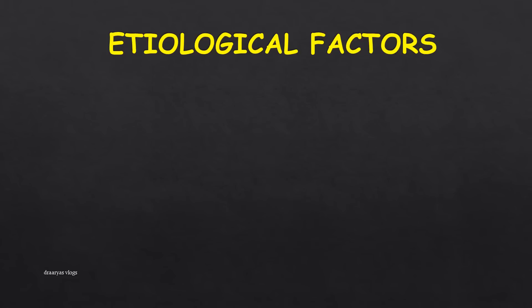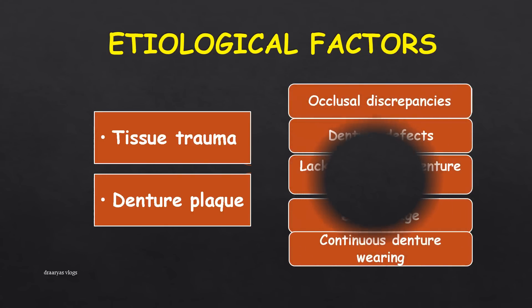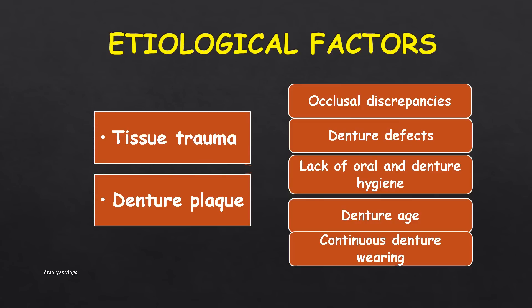The major etiologic factors for denture dermatitis are tissue trauma and denture plaque. Tissue trauma can be associated with occlusal discrepancies, denture defects, lack of oral and denture hygiene, denture age, and continuous denture wearing. The main cause is the presence of the denture in the oral cavity, associated with patients wearing dentures day and night. This infection frequently disappears if the dentures are not worn and the supporting tissues are allowed to rest. The third etiologic factor is Candida albicans.